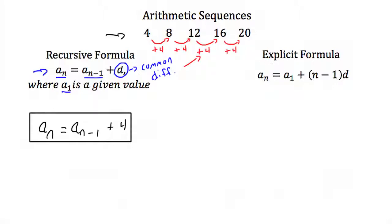An arithmetic sequence can also be written as an explicit formula. An explicit formula uses the position of each term instead of previous terms. Any term a_n equals the first term plus (n minus 1) times d, where d is the common difference. For example, if I was looking for the third term, a_3, that would equal the first term plus (3 minus 1), or 2, times the common difference. For this sequence, the explicit formula is: a_n equals 4 plus (n minus 1) times 4.